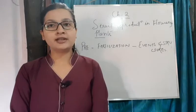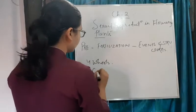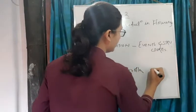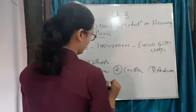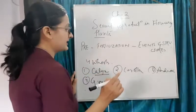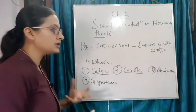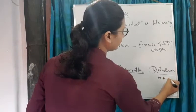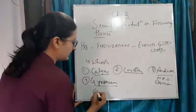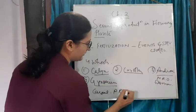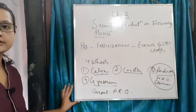Let us start with the structure of the flower. There are four whorls: number one is calyx, number two is corolla, number three is androecium, and number four is gynoecium. Calyx is the green leafy part present at the base of the flower. Corolla is the colored part which attracts insects for pollination. Androecium is the male reproductive organ - a group of stamens. Gynoecium is the carpel, the female reproductive organ.